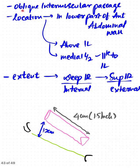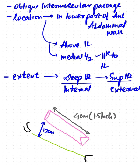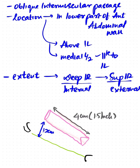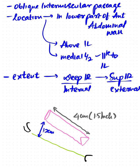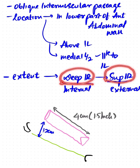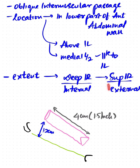The inguinal canal is an oblique intramuscular passage located in the lower part of the anterior abdominal wall, above the inguinal ligament. Its medial half is present parallel to the inguinal ligament. It is directed downward, forward, and medially, and extends between the deep inguinal ring and the superficial inguinal ring. The deep inguinal ring is also called the internal inguinal ring, and the superficial inguinal ring is also called the external inguinal ring.